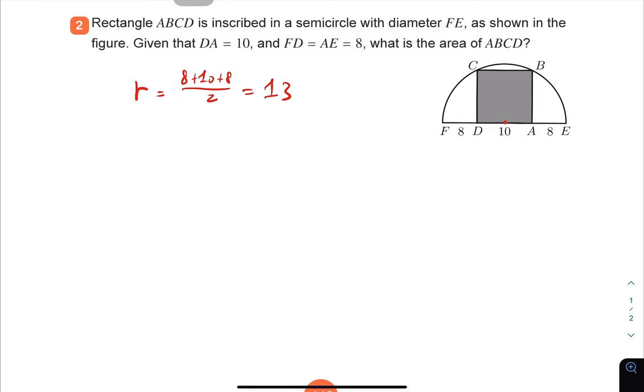Once we know the radius is 13, we can see that if we join the center to either B or C, the length is also going to be 13 because that's the radius of the circle.